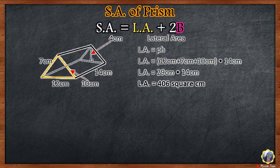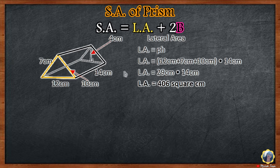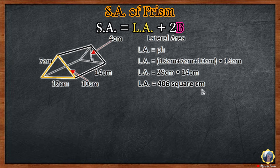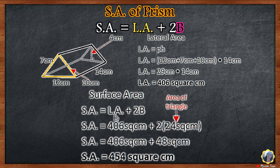Next example: Find the surface area of the triangular prism. First, get the lateral area. The formula is perimeter of the base times height. The base here is the triangle. The perimeter is 7 cm plus 12 cm plus 10 cm, which equals 29 centimeters, times the height of 14 centimeters, equals 406 square centimeters. This is the lateral area.